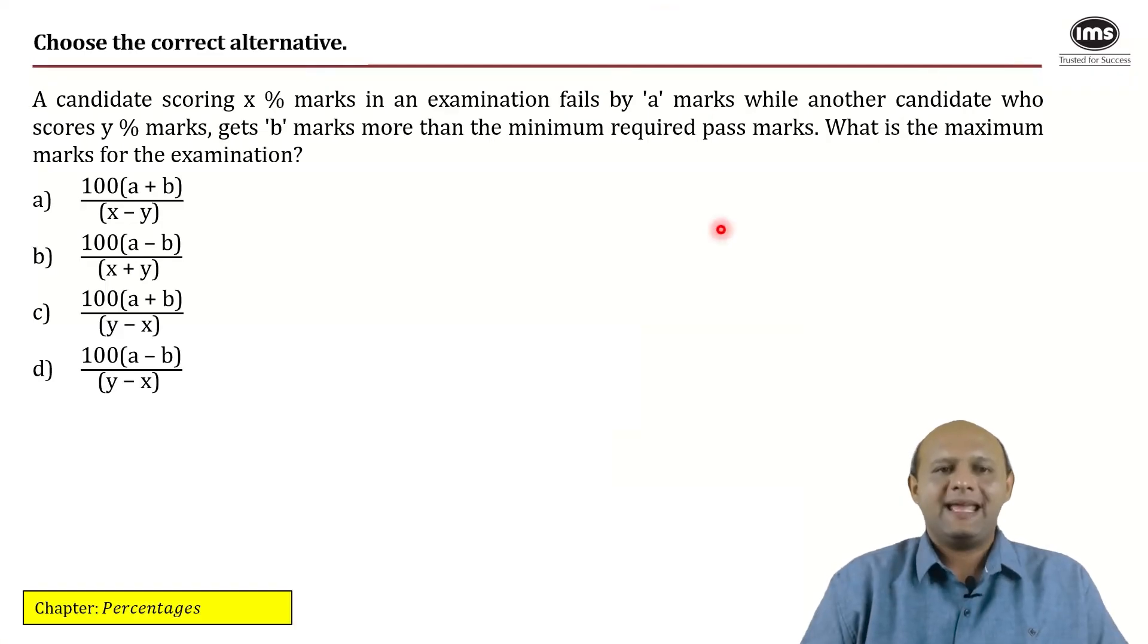A candidate scoring X percent marks in an exam fails by A marks. Another candidate who scores Y percent marks gets B marks more than the minimum required pass marks.